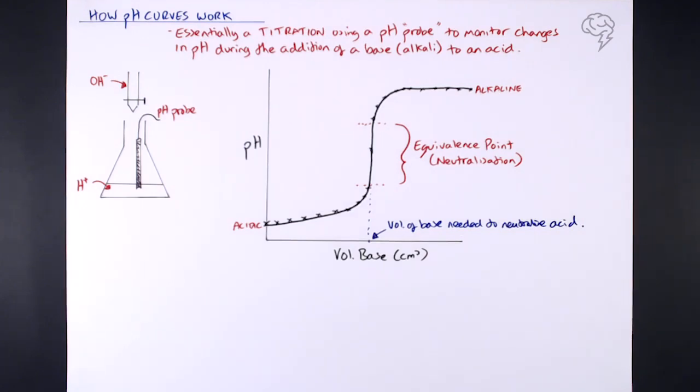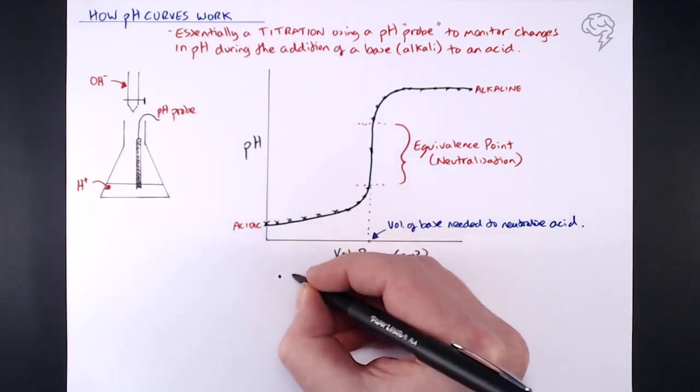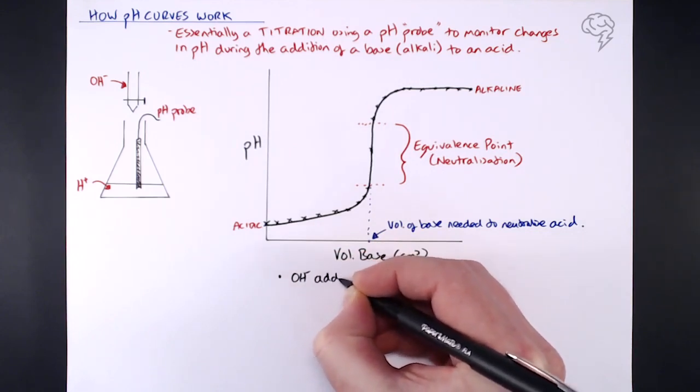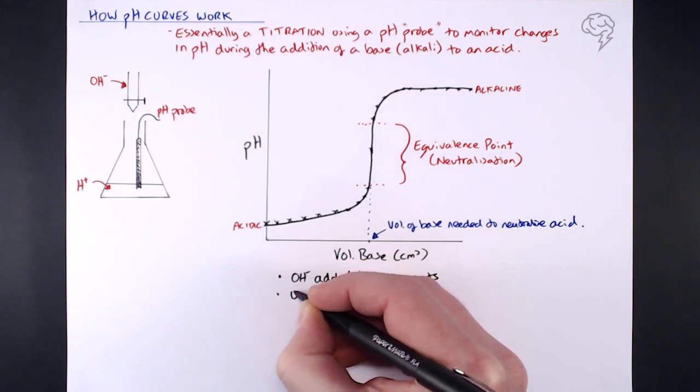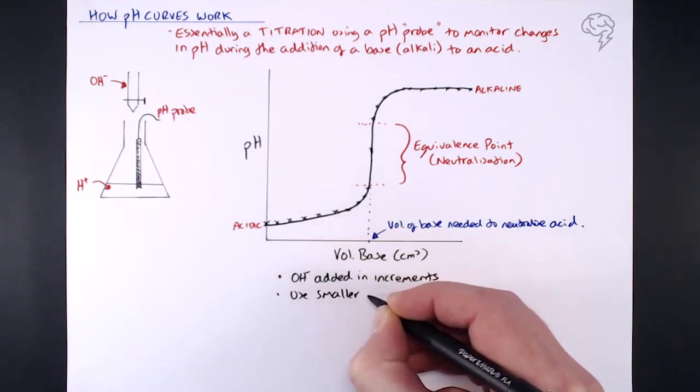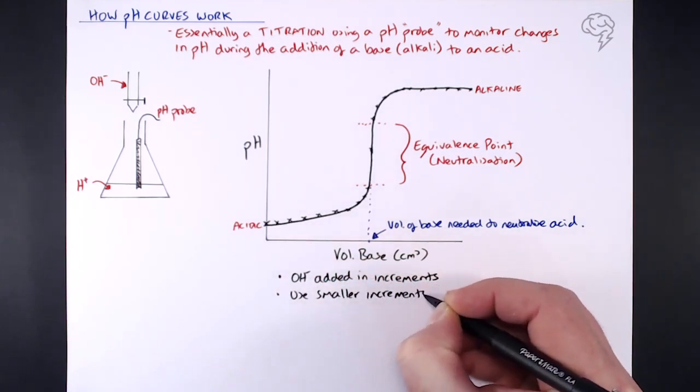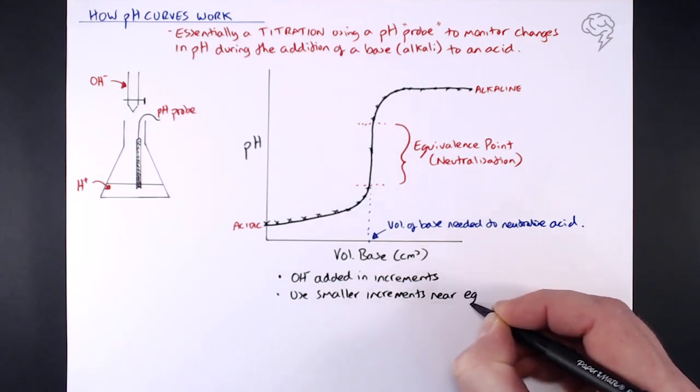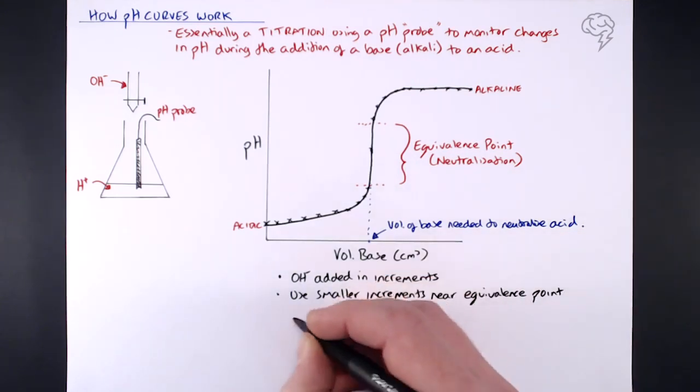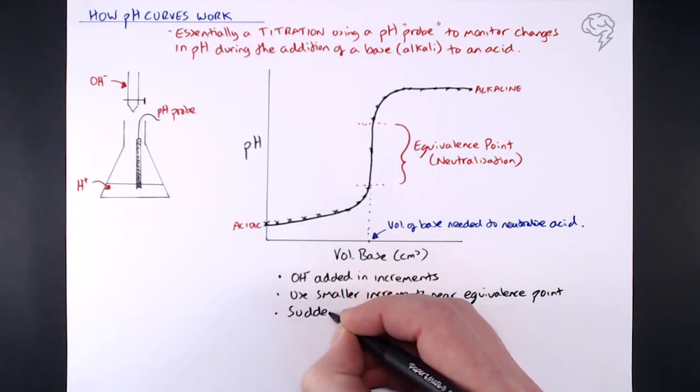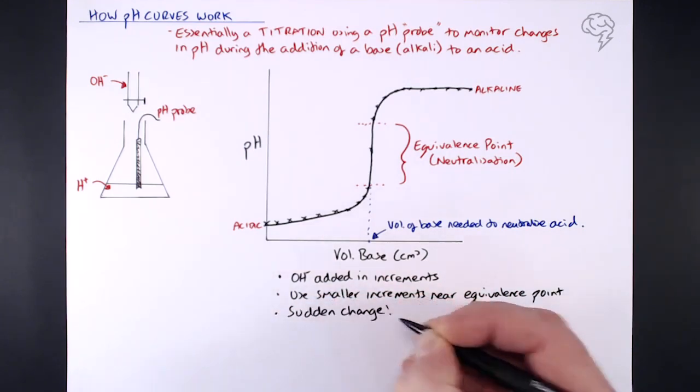But these are the main points that I want you to take away from this. First point is that the OH minus, the base, is added in increments. And as you get near that equivalence point, as you start to see a more marked change in the pH, you need to use smaller increments. You can figure out about where that equivalence point is going to be by doing a rough one to start with. You're then going to get that sudden change - that's our equivalence point.